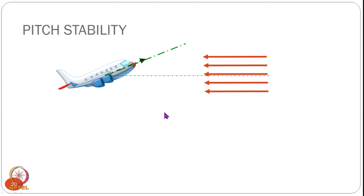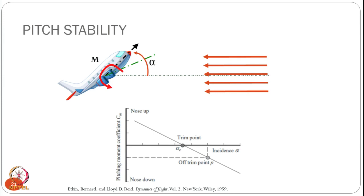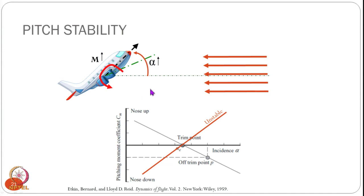In the other case, if we have this angle of attack and the pitching moment is also in the positive direction, a non-zero angle of attack would make it nose up even more, so the angle of attack and pitching moment just increase. For this case, the pitching moment curve versus angle of attack would be in the opposite direction, generating a destabilizing moment. The moment increases, the angle of attack increases, and such a system would be unstable.